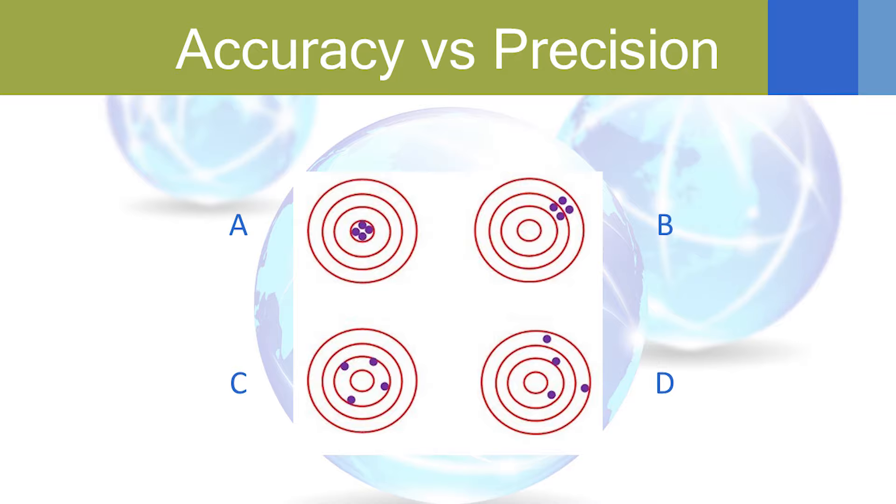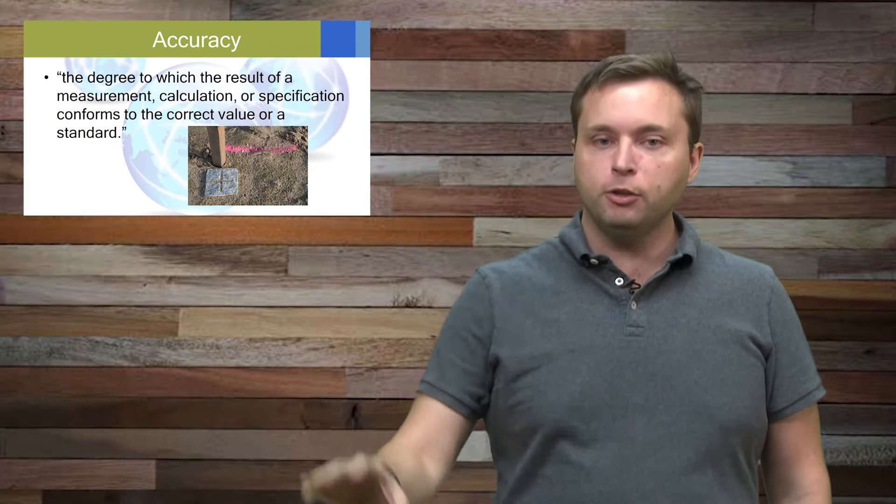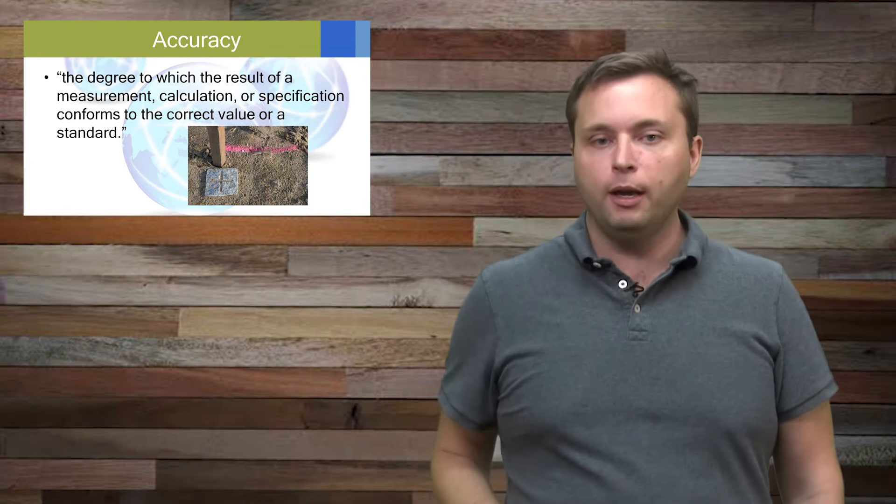Now the last thing is going to be accuracy versus precision. Webster's defines accuracy as the degree to which the result of a measurement, calculation, or specification conforms to the correct value or a standard. I don't know what that means.